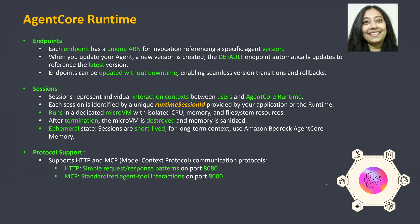Now let's look at endpoints. Each endpoint has a unique ARN and it references a specific version. When you update your agent, a new version is created. The default endpoint always points to the latest version — this is important during the lab. If you want to call a specific version, you will have to specify which version. Endpoints can be updated without any downtime, enabling seamless version transitions.